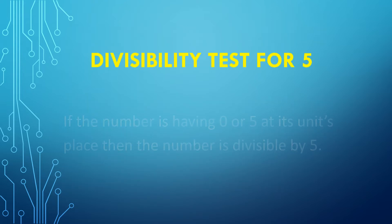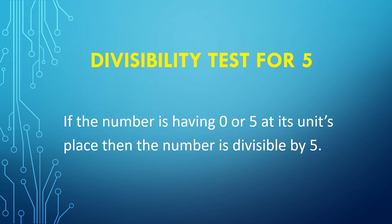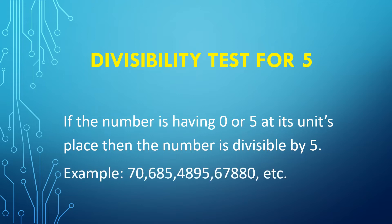Divisibility test for 5: if the number has 0 or 5 at its unit's place, then the given number is divisible by 5. For example, 70 has 0 at its unit's place, so 70 is divisible by 5. 685 has 5 at its unit's place, so the entire number is divisible by 5. 4,895 has 5 at its unit's place, so the entire number is divisible by 5. 67,880 has 0 at its unit's place, so the entire number is divisible by 5.